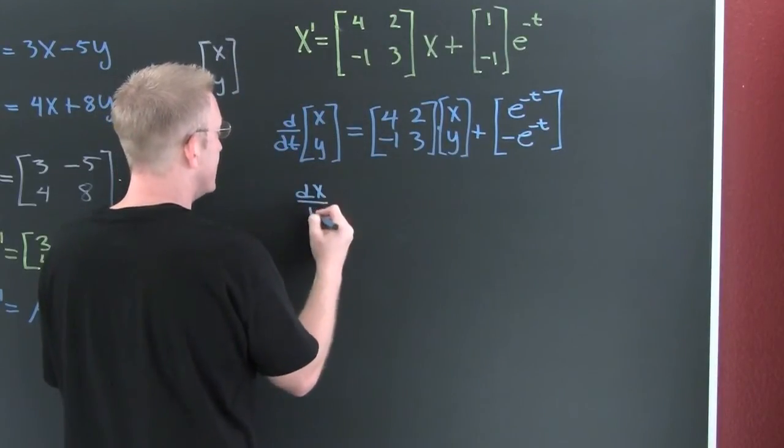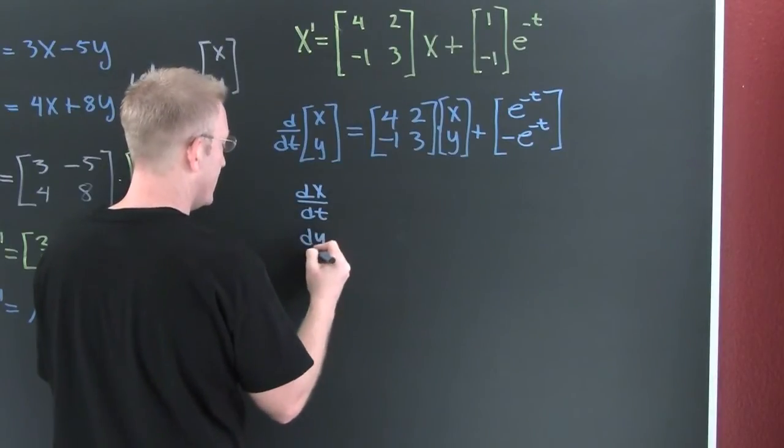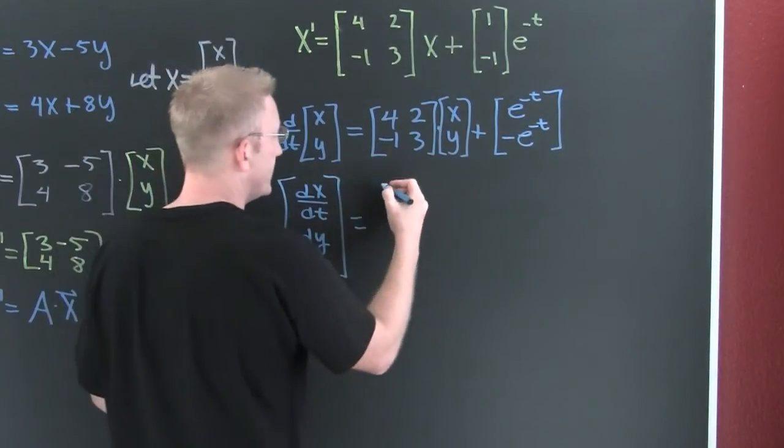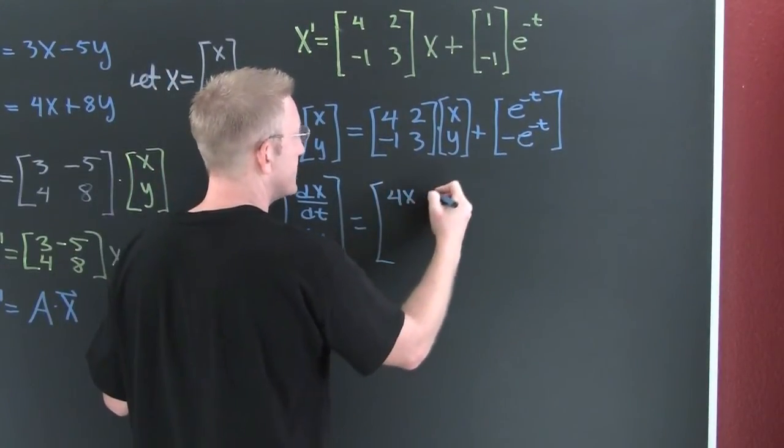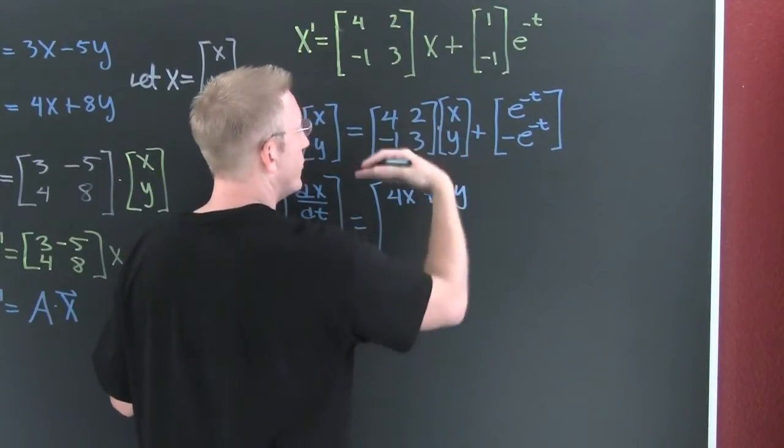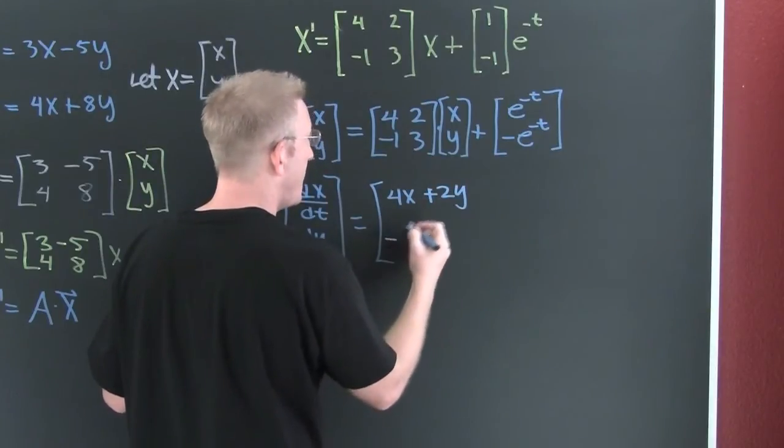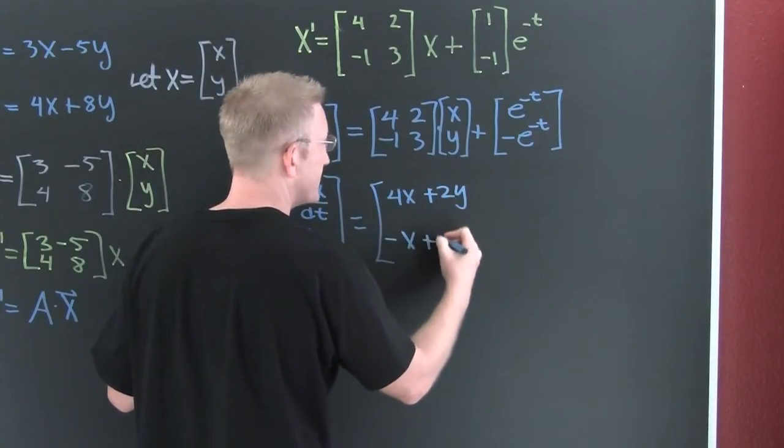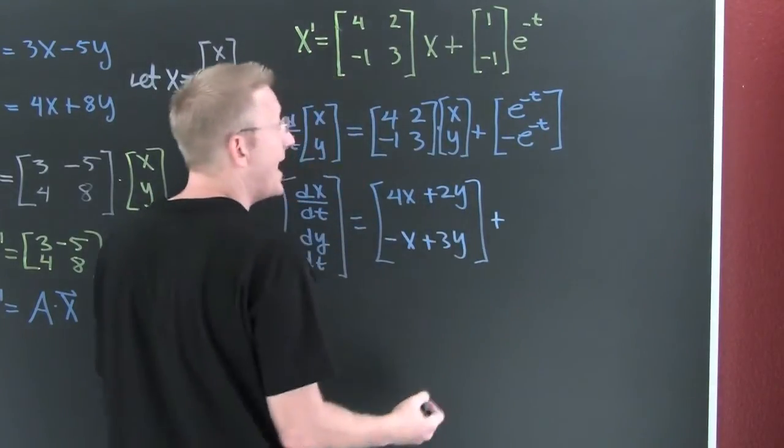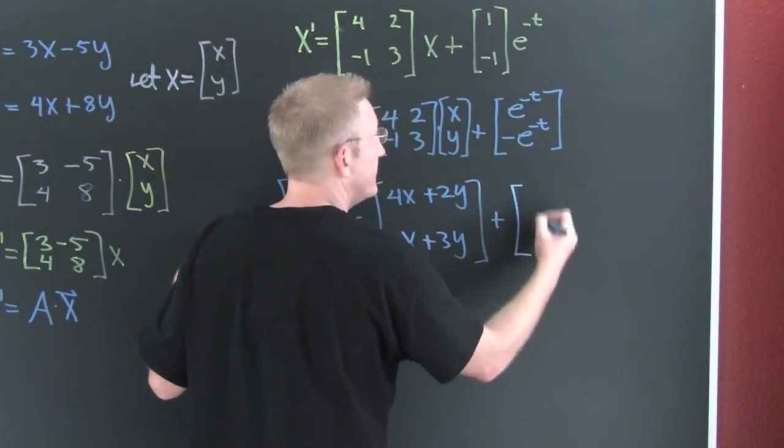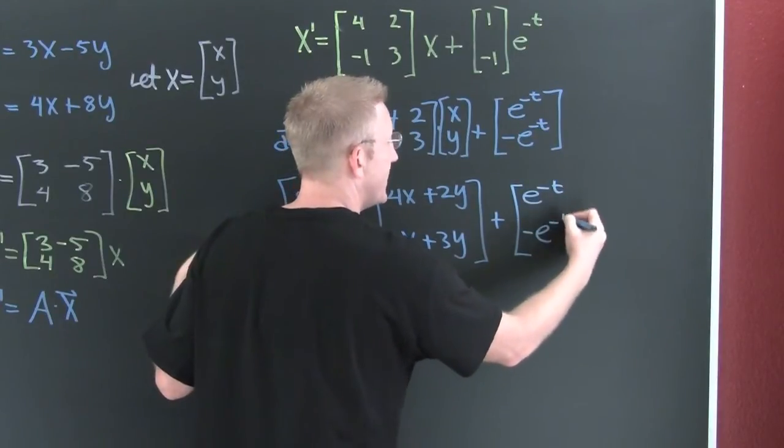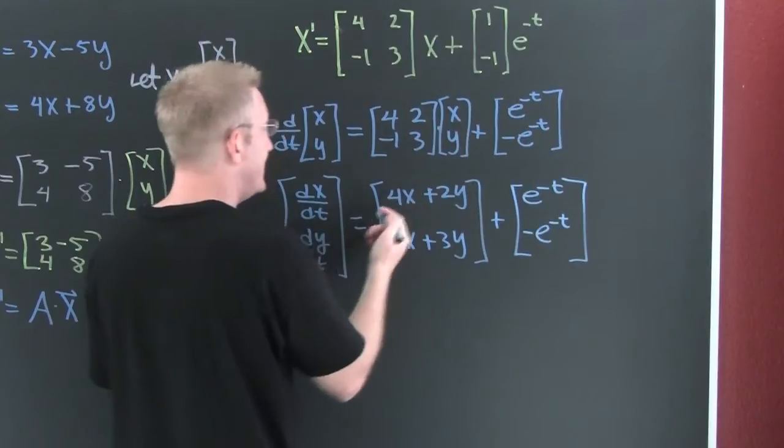This is dx/dt, dy/dt. And we see that's going to be 4x plus 2y, when we perform that matrix multiplication, minus x plus 3y. And then I'm going to add that vector to it, e to the minus t, minus e to the minus t.